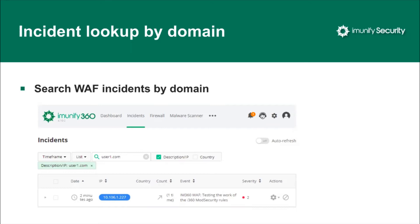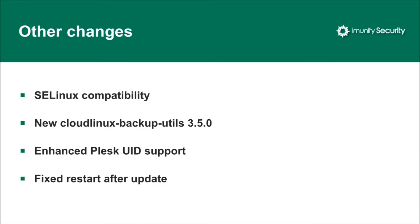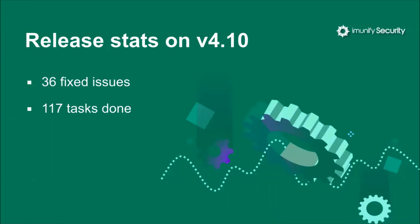A noticeable UI enhancement is the way you can analyze web application firewall incidents on the incidents tab. Now you can filter incidents not only by app, user IP, or event description, but by domain as well — just type the domain name to see all web incidents related to it. We've also implemented SELinux configuration support, introduced new CloudLinux Backup Utils version 3.5, added support for multiple accounts with the same user ID on Plesk setups, and fixed a bug in the Immunify agent related to agent restart after update. Overall, we've implemented 117 tasks and fixed 36 issues.